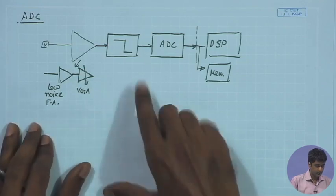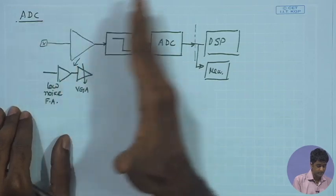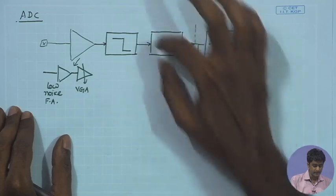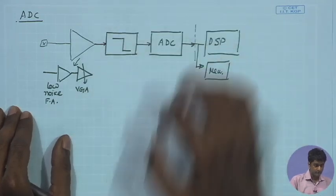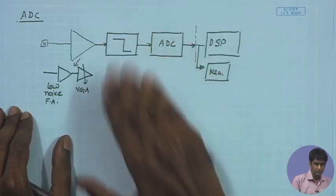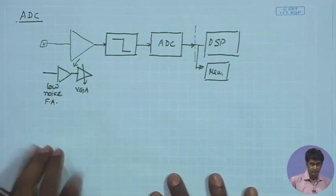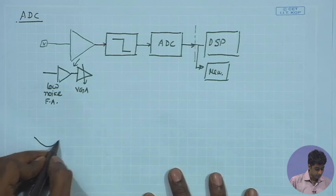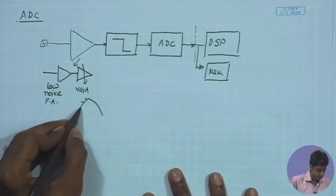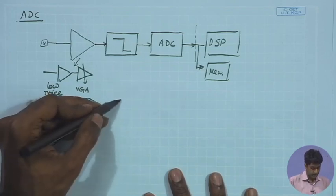Once the signal has traversed the entire front end, been processed and amplified, it is available at the ADC. We expect the swing of the signal to be almost from zero to VDD. Therefore, the ADC is also supposed to accept that entire signal. The basic function of an ADC is to quantize a continuous-time, continuous-amplitude signal into N discrete levels — it quantizes the entire input signal into N discrete levels.